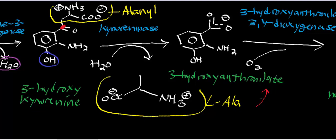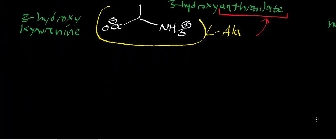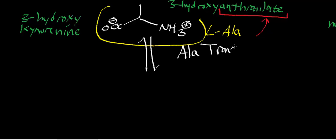The interesting thing about tryptophan catabolism is that we get 3-hydroxyanthranylate. But if we were to remove that hydroxyl group to be left with anthranylate, that anthranylate is used to biosynthesize tryptophan — though not in humans, that's done in bacteria. It's interesting to think about: anthranylate is a biosynthetic precursor to tryptophan, whereas 3-hydroxyanthranylate is a catabolic product. Now let's focus on L-alanine for just a second — this process is occurring in the liver.